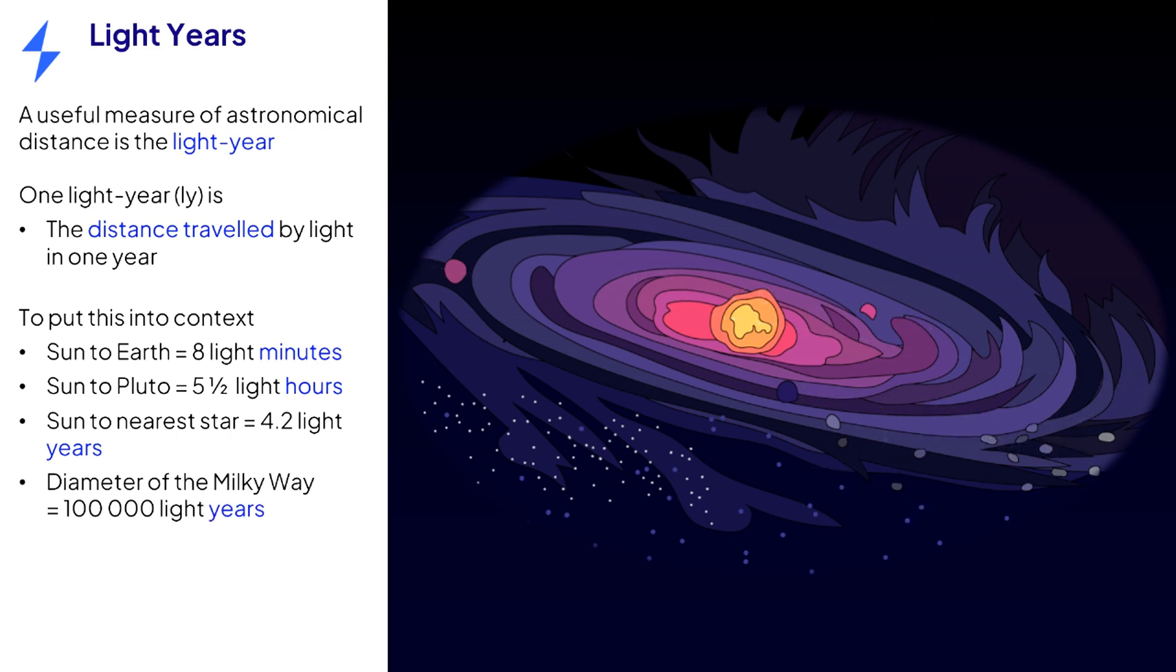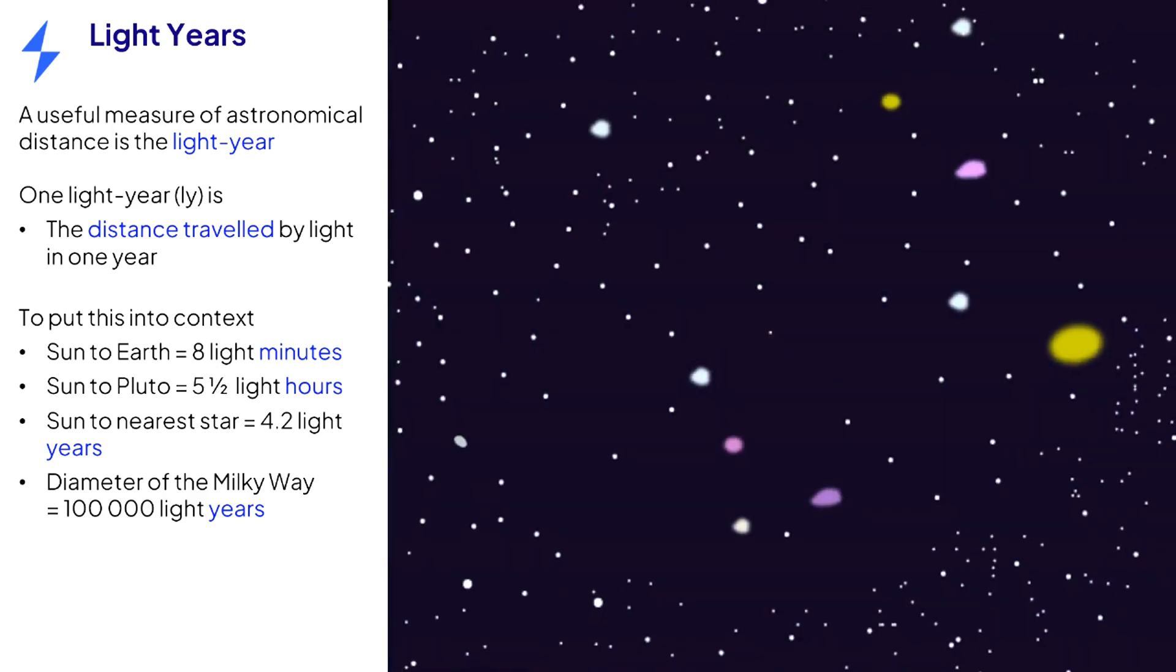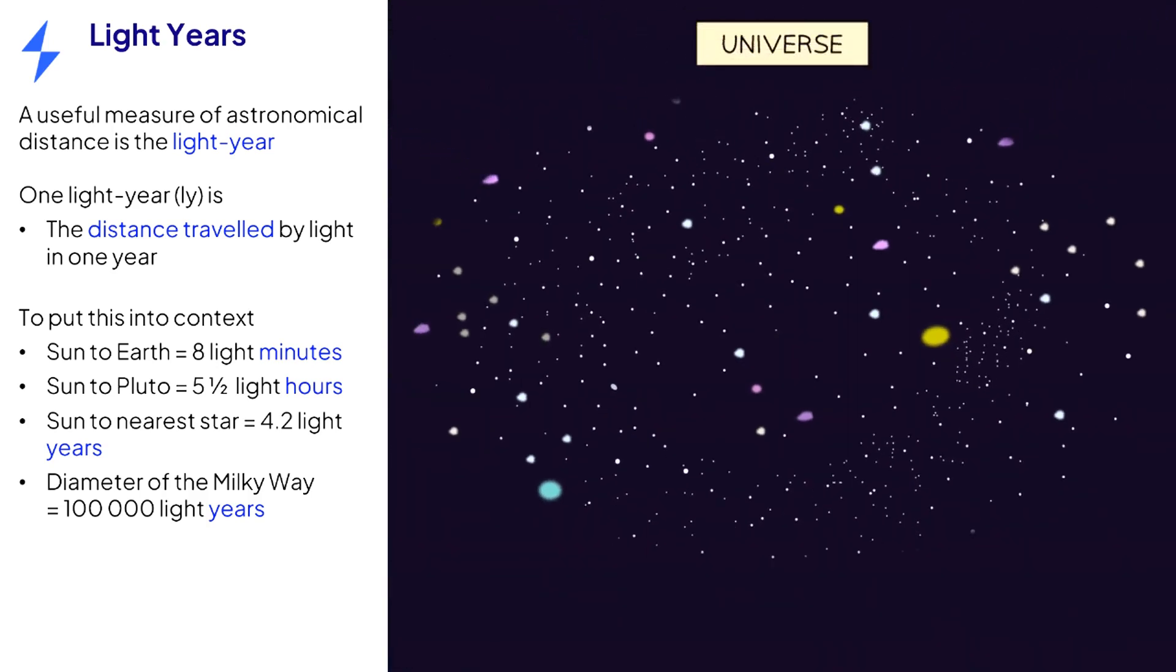Hopefully you are starting to get an idea of the vast scale of the universe. Next, if we zoom out as far as we possibly can go, we find the size of the observable universe is a gigantic 93 billion light years across.